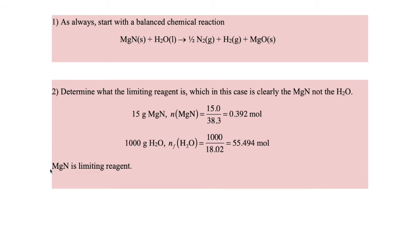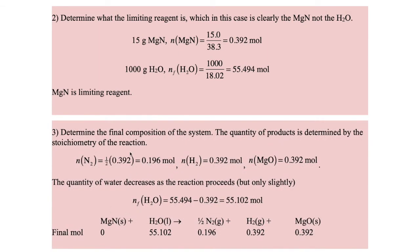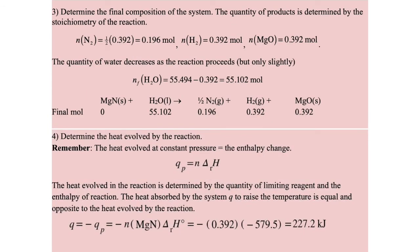Magnesium nitride is our limiting reagent, and water is available in great excess. The amount of water decreases just a little bit with lots left over. All of the magnesium nitride reacts, and therefore we can determine the moles of N2 remaining afterward: just one-half from the stoichiometry of reaction times the number of moles of magnesium nitride that reacted. The quantity of hydrogen and magnesium oxide will be the same as the number of moles of magnesium nitride after complete conversion. We know the composition of the system, and now we can determine the heat evolved in the reaction.